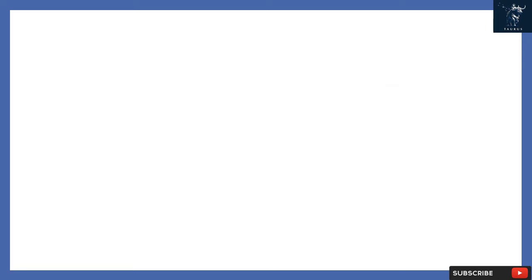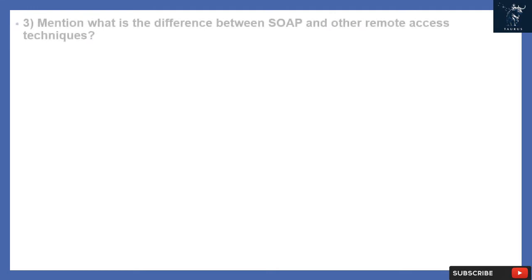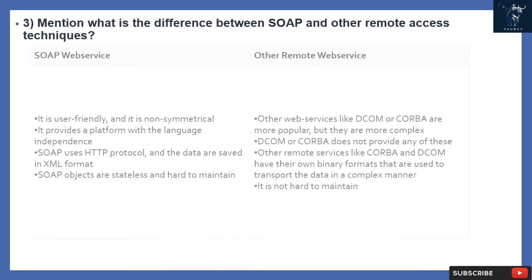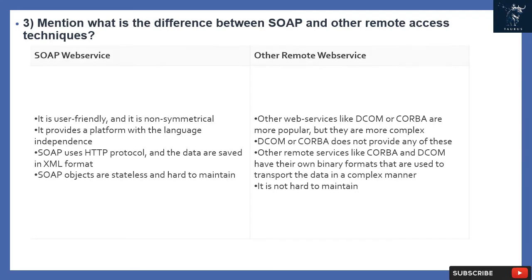Question 3: What is the difference between SOAP and other remote access techniques? SOAP web service is user-friendly and non-symmetrical. It provides platform and language independence, uses HTTP protocol, and data is saved in XML format. SOAP objects are stateless. Other remote web services like DCOM or CORBA are more popular but more complex. DCOM and CORBA have their own binary formats used to transport data in a complex manner.